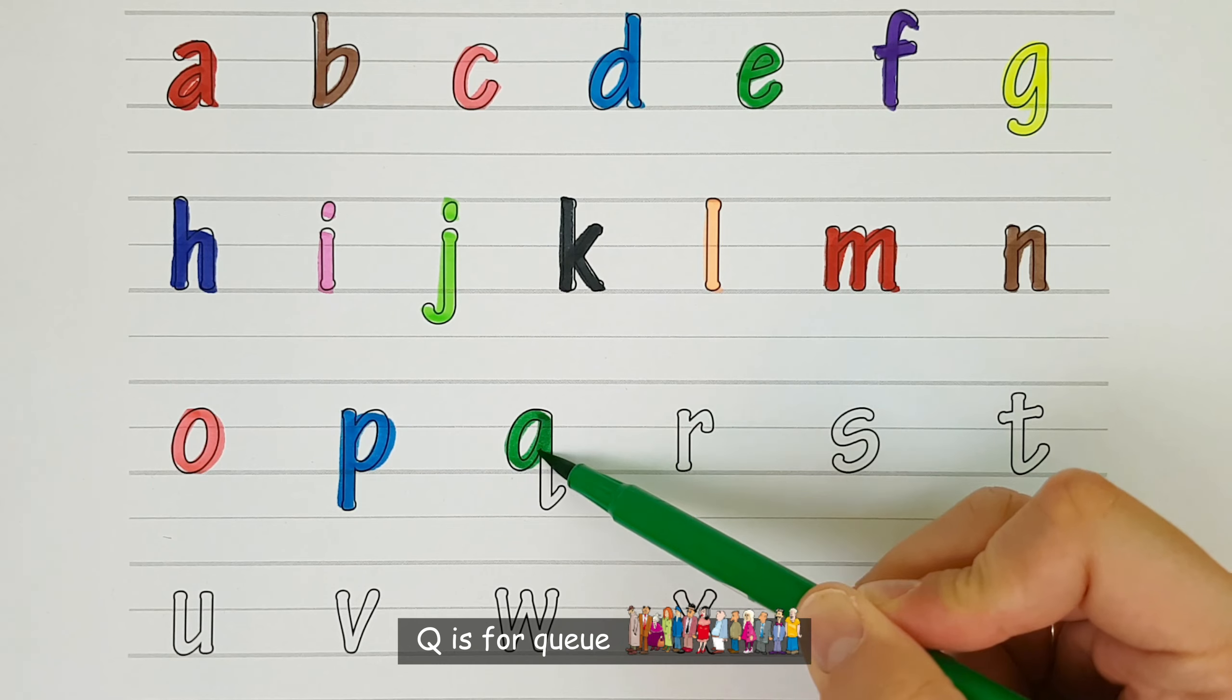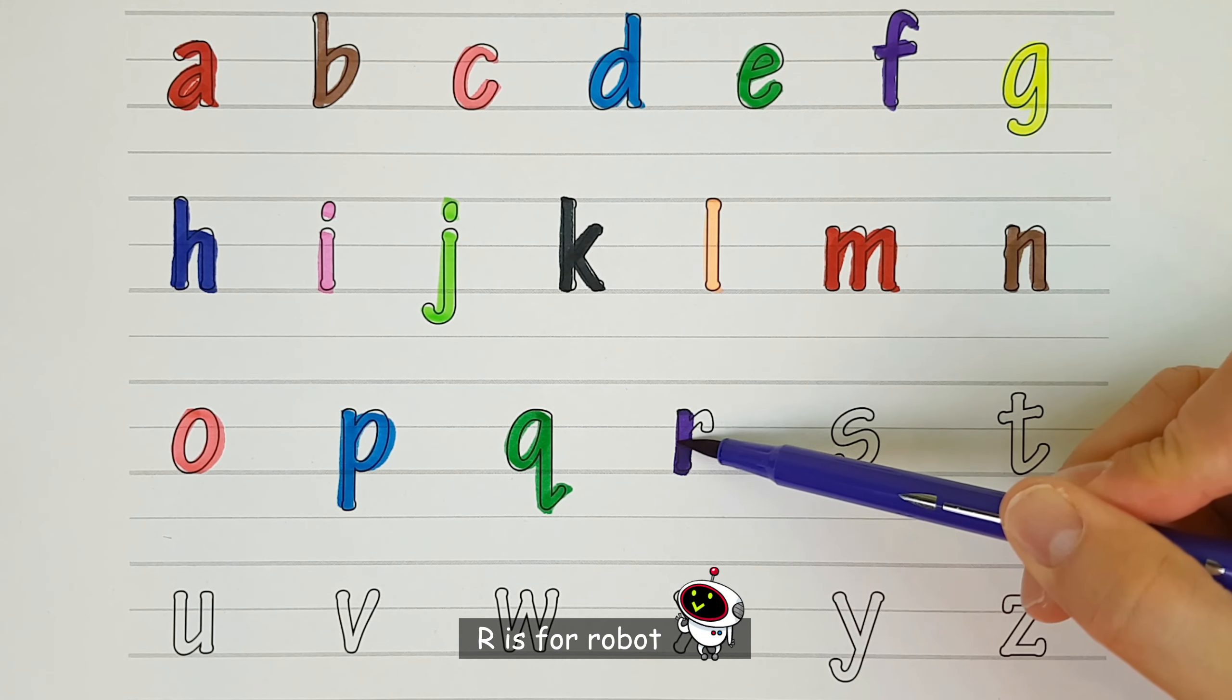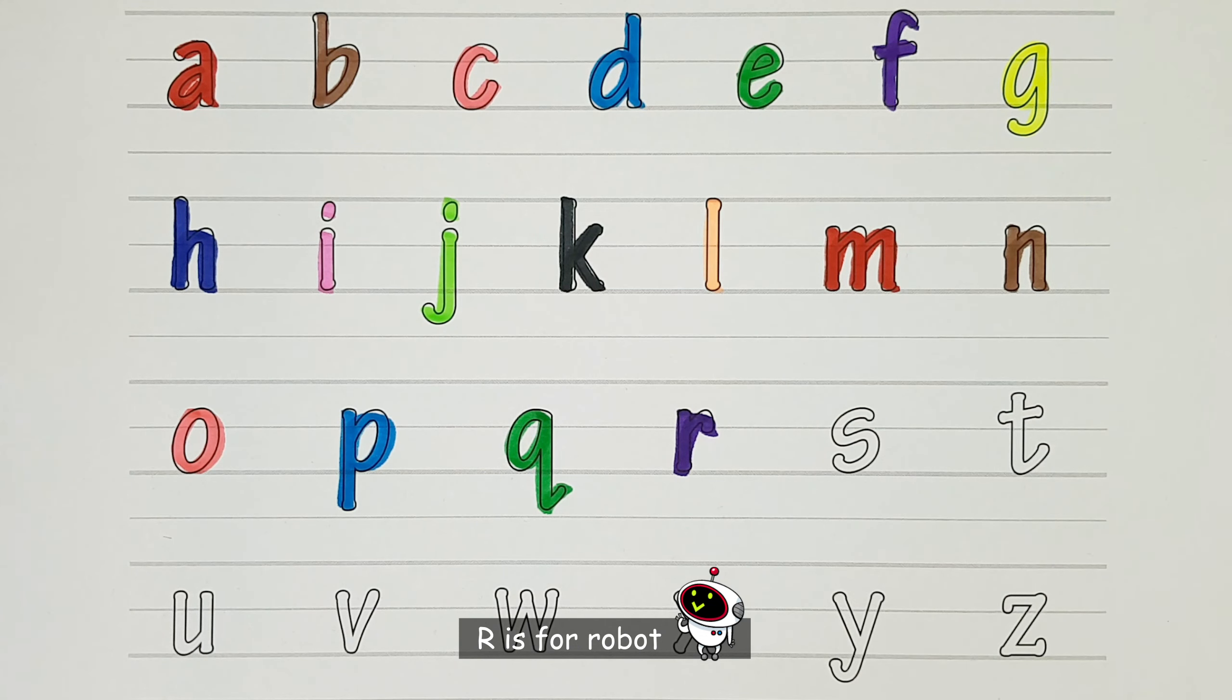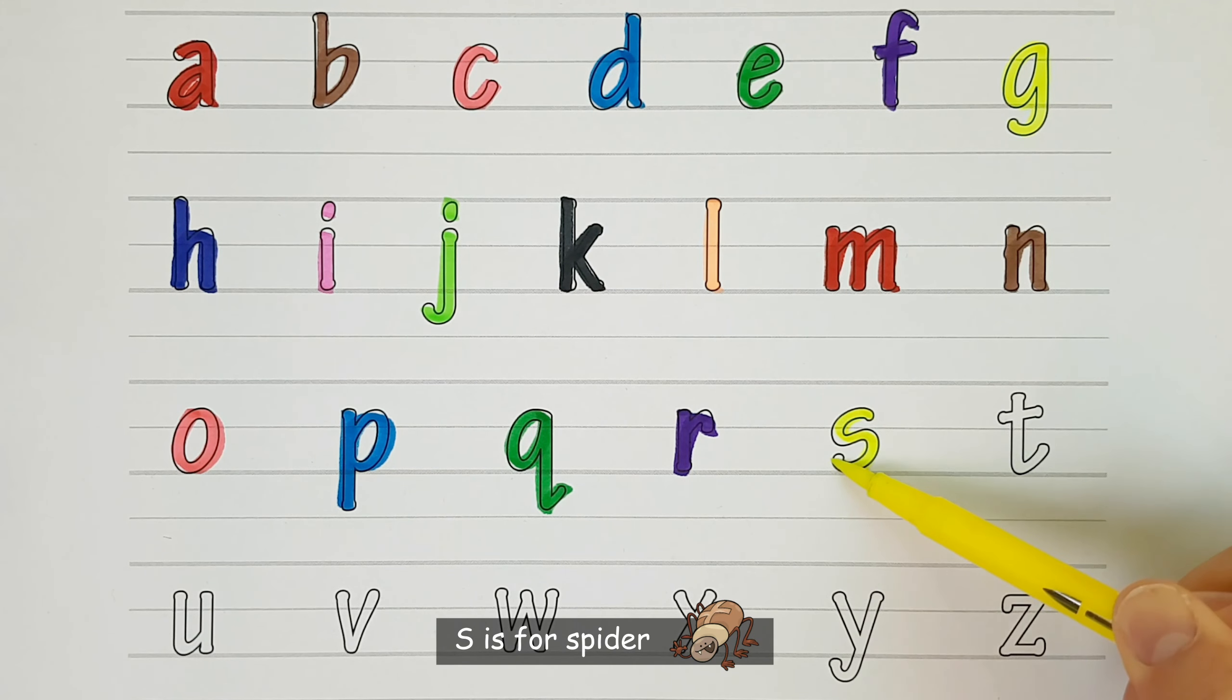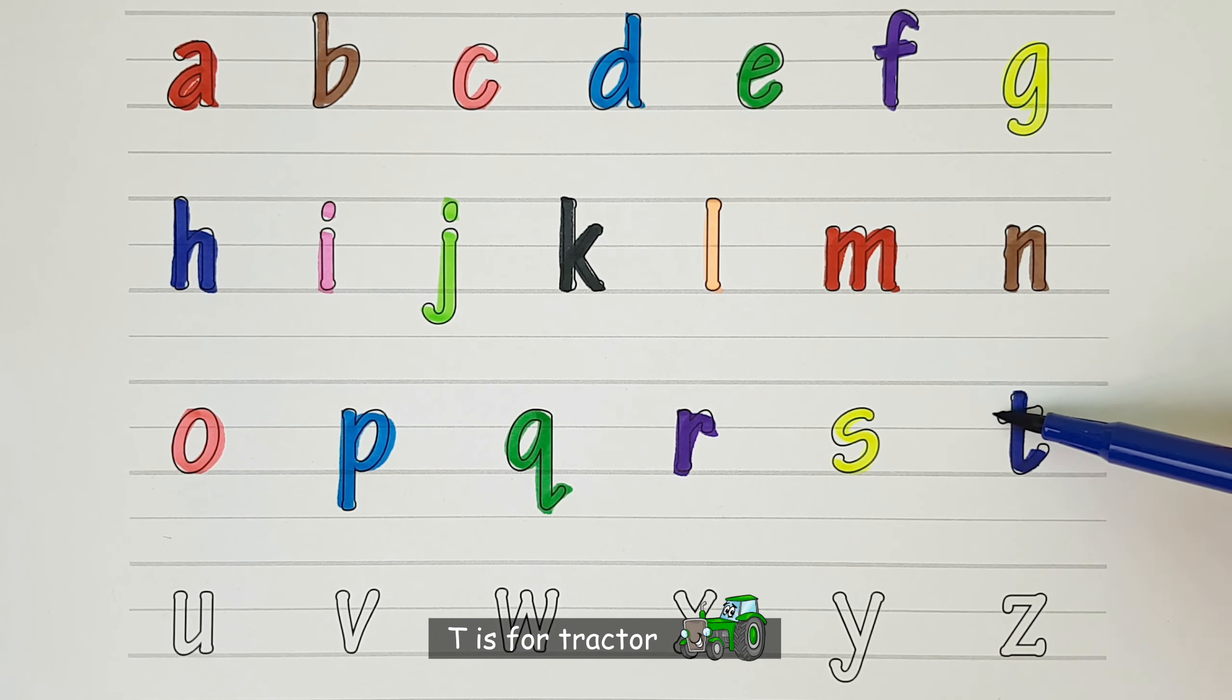Q. Q is for Q. R. R is for Robot. S. S is for Spider. T. T is for Tractor.